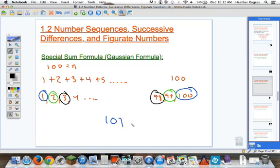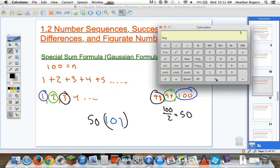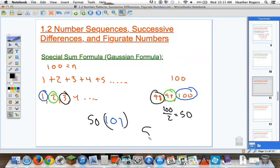Then he said, 'How many pairs do I have? If I've got 100 numbers and I'm pairing them up, 100 divided by two is 50. So 50 times 101...' He didn't have a calculator, but using one here, that's 5,050. He told the teacher, 'The answer is 5,050.' He did this in just a few minutes, and the teacher was blown away.